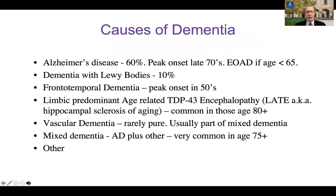There are many causes of dementia. Alzheimer's disease is the single most common, making up about 60 percent of cases and playing a role in another 10 or 20 percent. Peak onset of Alzheimer's is in the late 70s, around age 78. So-called early onset Alzheimer's disease describes onset below the age of 65, and there is an autosomal dominantly inherited form making up less than one percent of cases with disease onset in the 30s and 40s. The next most frequent cause at post-mortem is dementia with Lewy bodies, making up about 10 percent of cases.